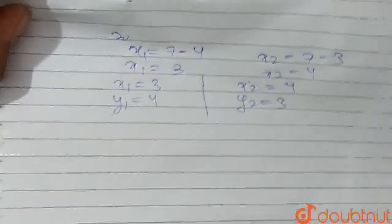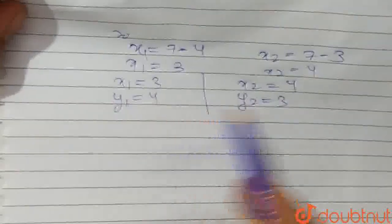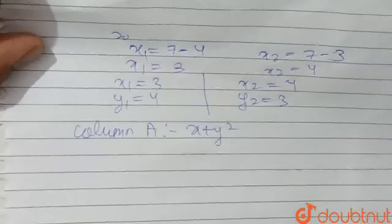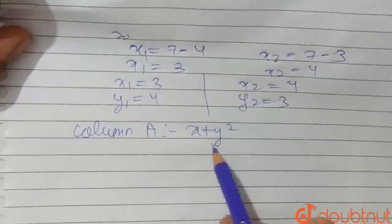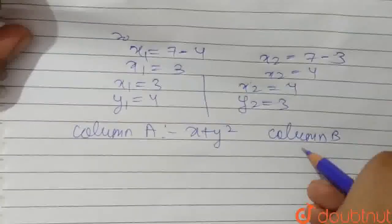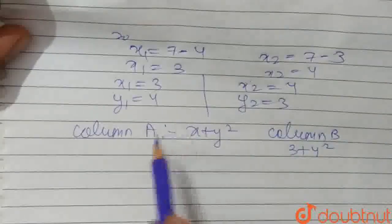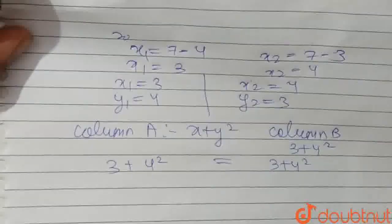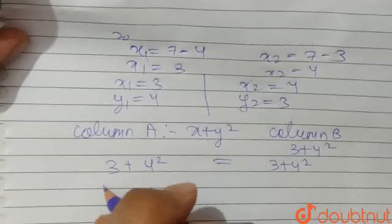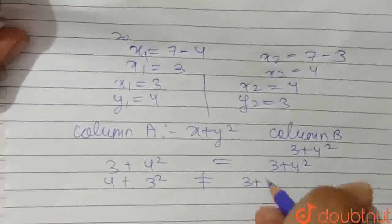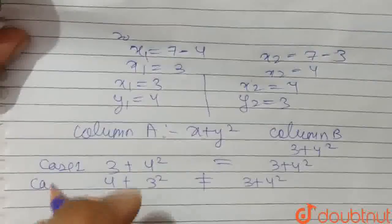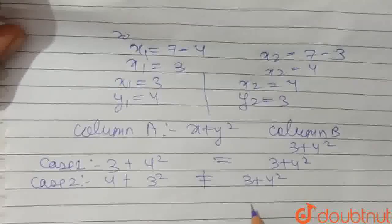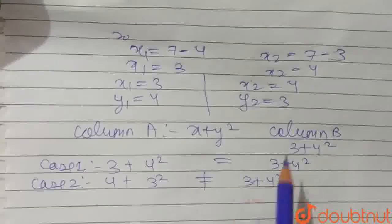Now we put these x and y values into Column A and Column B. Column A is x plus y squared, and Column B is 3 plus 4 squared. If we put x1 as 3 and y1 as 4, we get 3 plus 4 squared for Column A, and Column B is also 3 plus 4 squared — they are equal. But if we put x2 and y2, that is 4 plus 3 squared, this is not equal to 3 plus 4 squared.